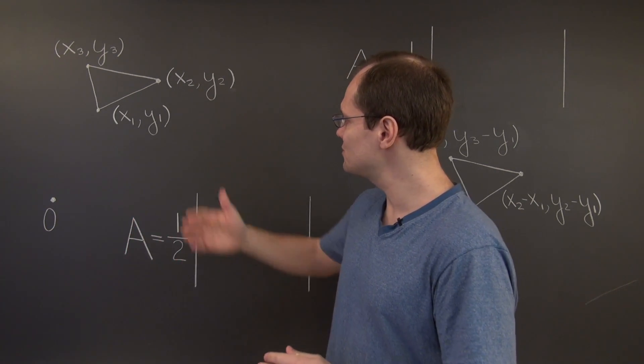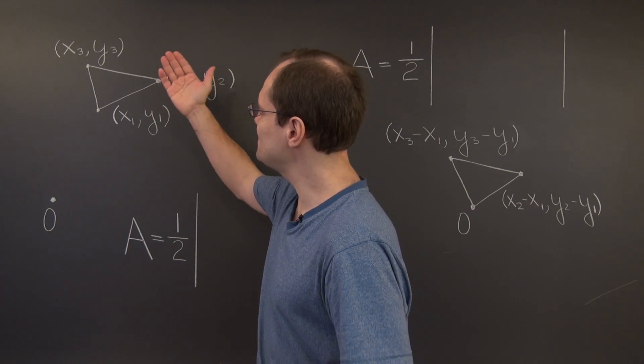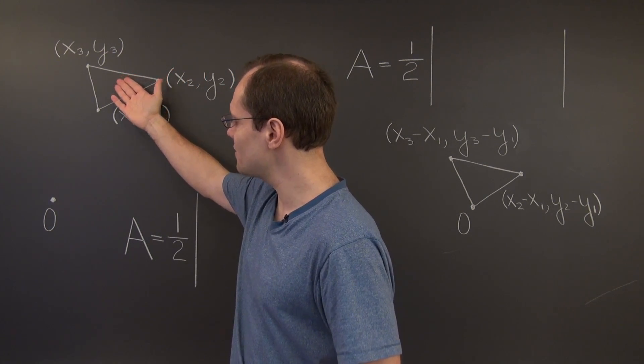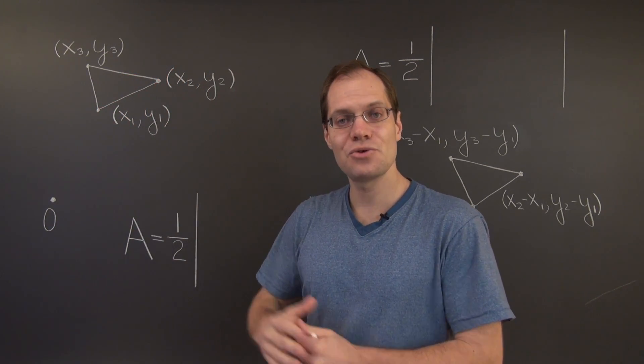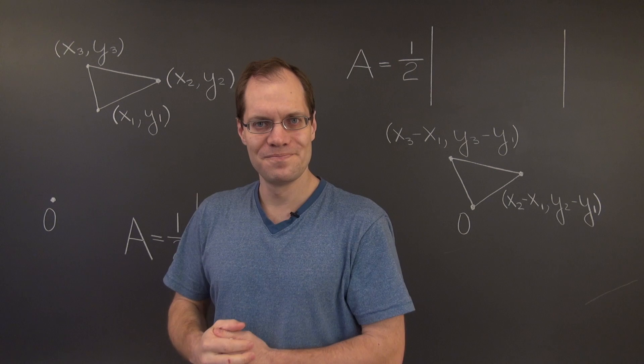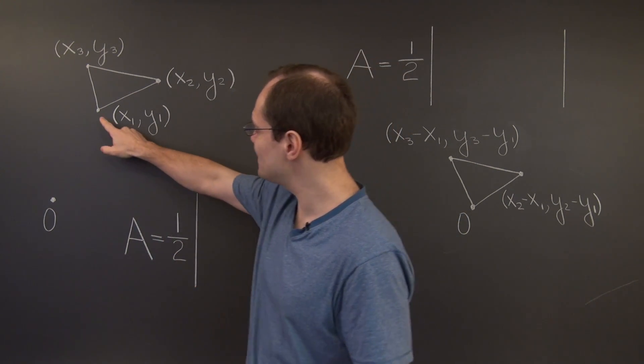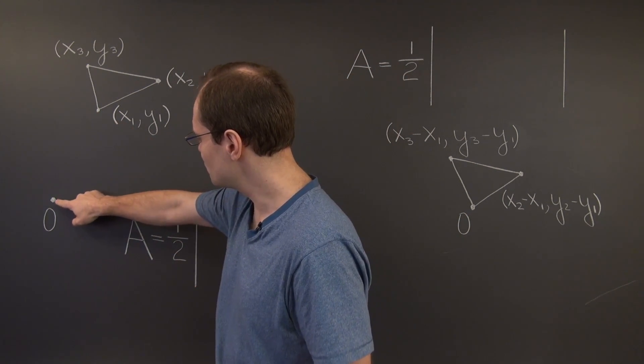So what's a natural thing to do here? Well, it would be simply to translate this triangle back to the origin, so we can use what we already know. And let's agree to translate this vertex right to the origin.